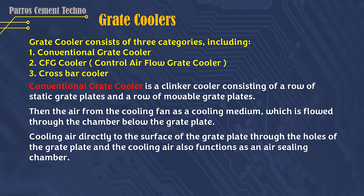Conventional grate cooler is a clinker cooler consisting of a row of static grate plates and a row of movable grate plates. The air from the cooling fan serves as a cooling medium, which is flowed through the space under the grate plate. Cooling air flows directly to the surface of the grate plate through the holes of the grate plate, and also functions as an air sealing chamber.